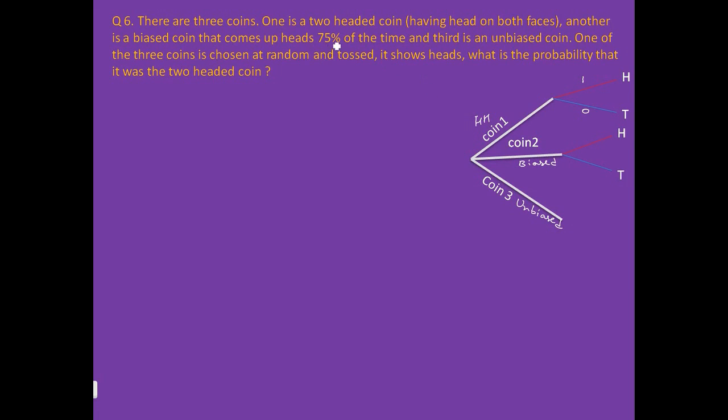And because it is biased, it is 75% head. 75% means 3 over 4. Four times toss, three times head will come and one time tail will come. So this is 3 by 4 probability head will come, and 1 by 4 tail will come.